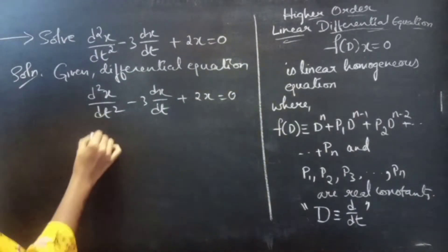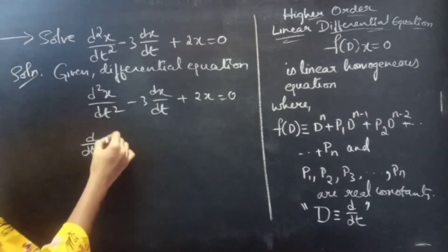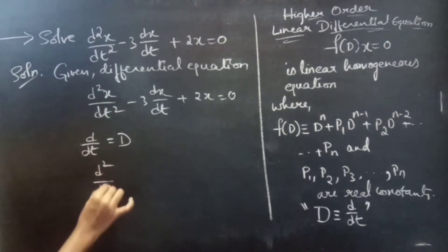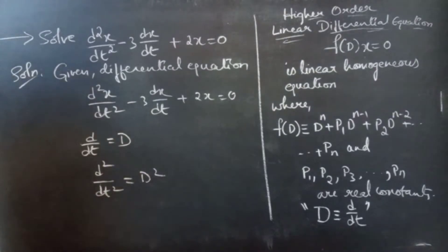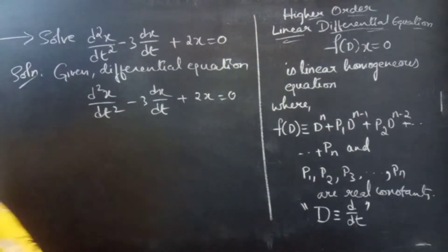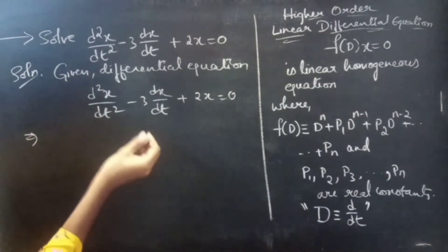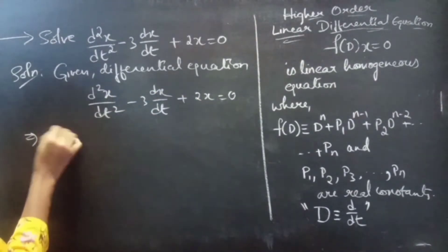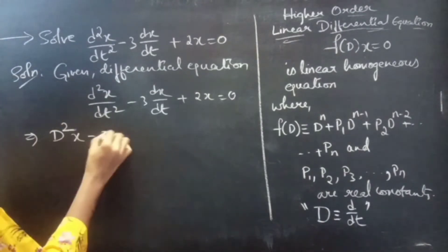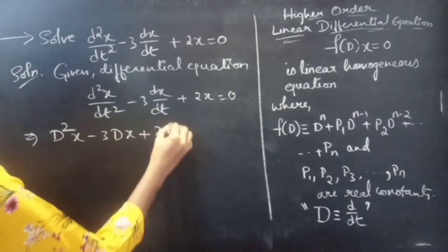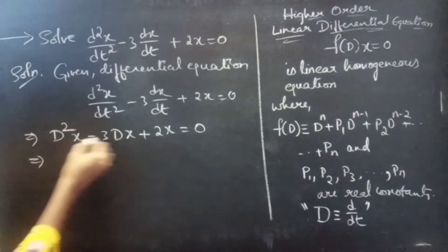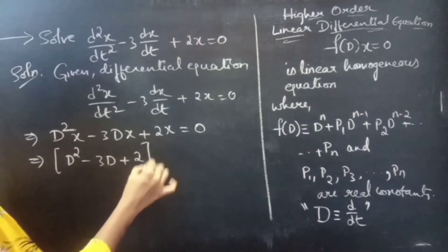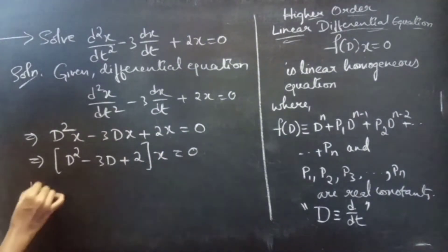Let's write the given equation in operator form by replacing d/dt by the operator capital D. Then d²/dt² will be capital D². Now change into operator form: D²x minus 3Dx plus 2x equals 0. Take x common from all three terms and you'll get D² minus 3D plus 2, times x, equals 0, which is in operator form.